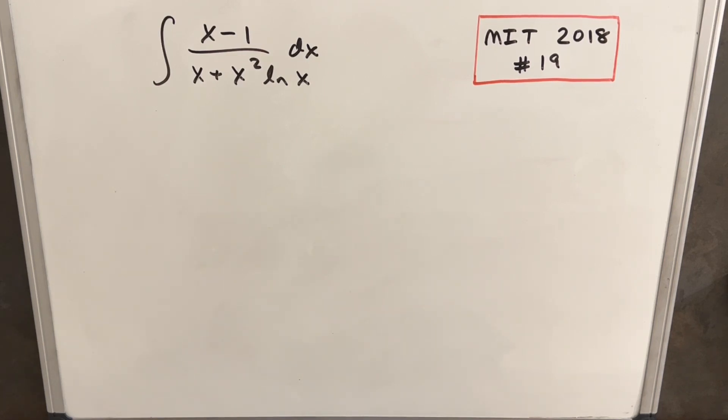Hey, this is MIT Integration B 2018 problem number 19. We have the integral of (x-1) over (x + x²ln(x)) dx.